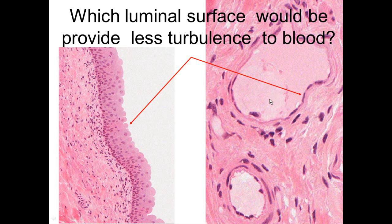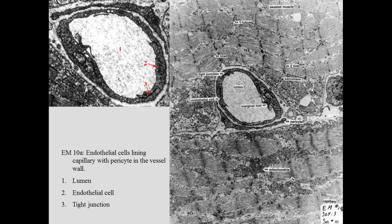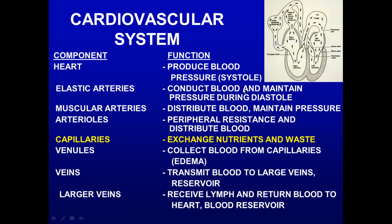Or would cells like transitional epithelium create more turbulence, as blood would have to jump hurdles going through? A smooth, flattened cell is much more conducive to uninterrupted flow of blood. That is what we see in these capillaries — continuous capillaries with junctions between adjacent cells that maintain luminal contents separate from basal contents.